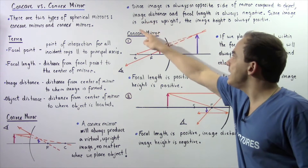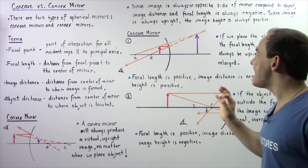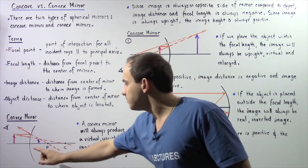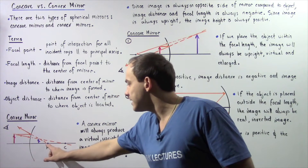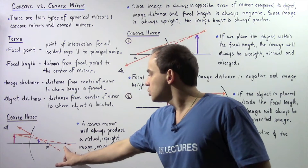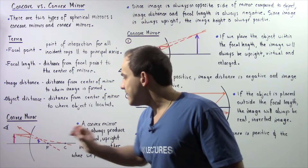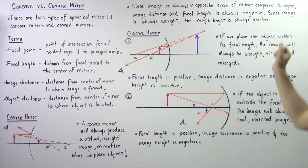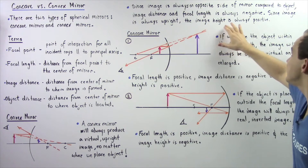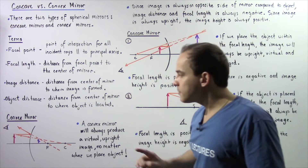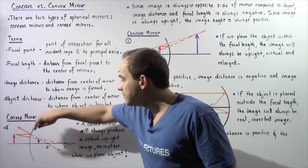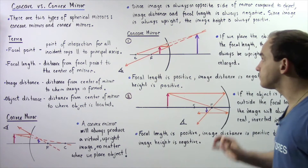Since the image is always on the opposite side of the mirror compared to the object — always on the right side of the convex mirror — the image distance is always negative, and the focal length is always negative. The focal length is the distance from the center to point F, and the radius of curvature is the distance from the center to point C. Because our image is always upright, the image height is always positive, meaning the image height points in the same direction as our object height.